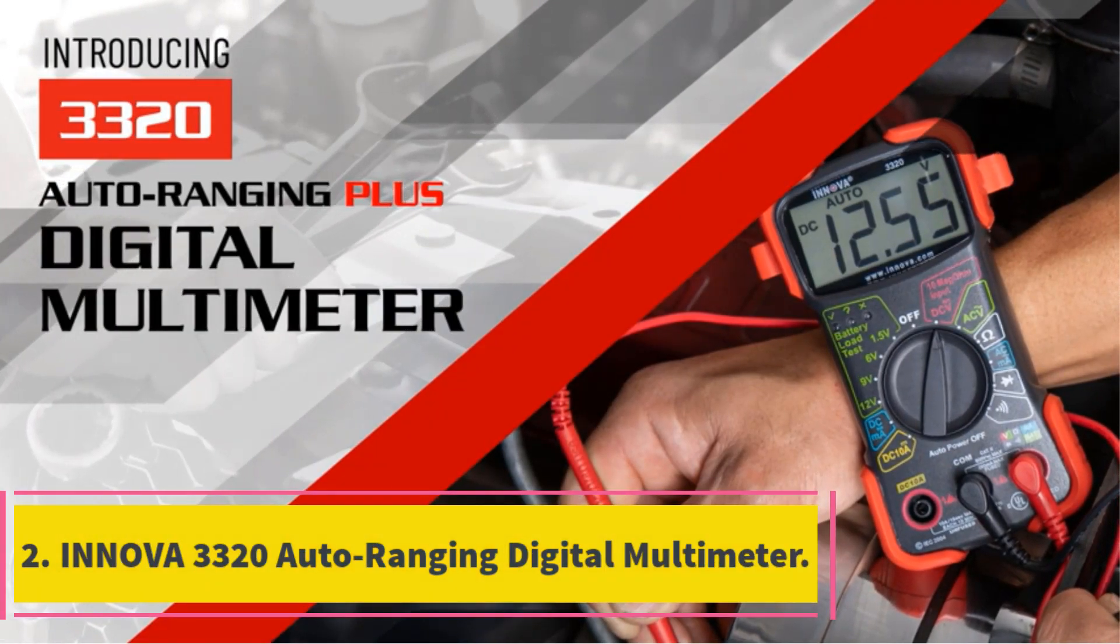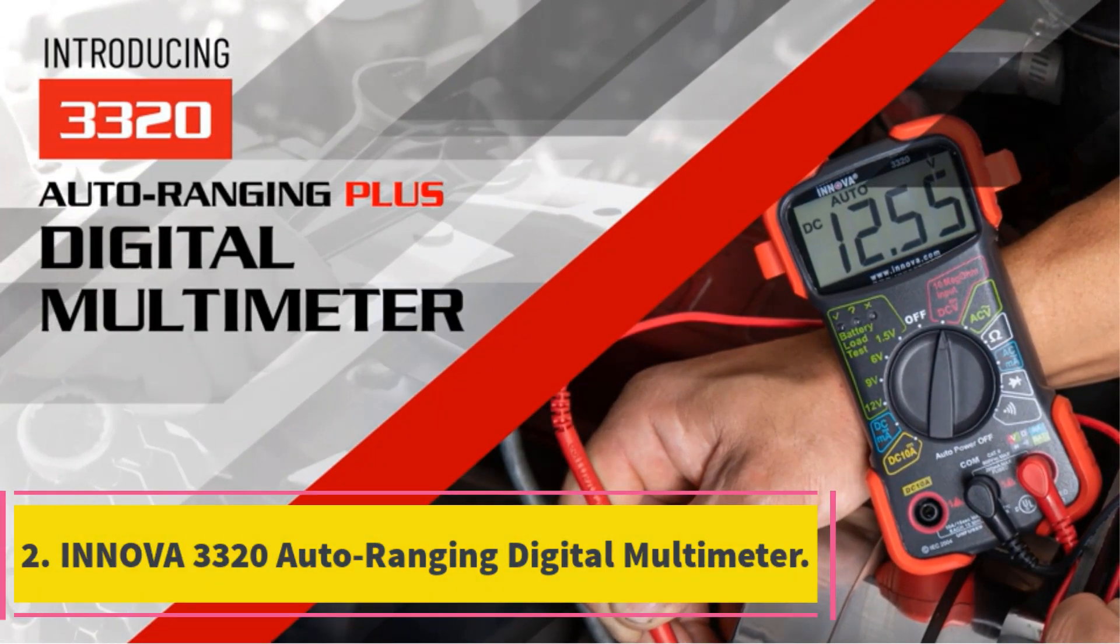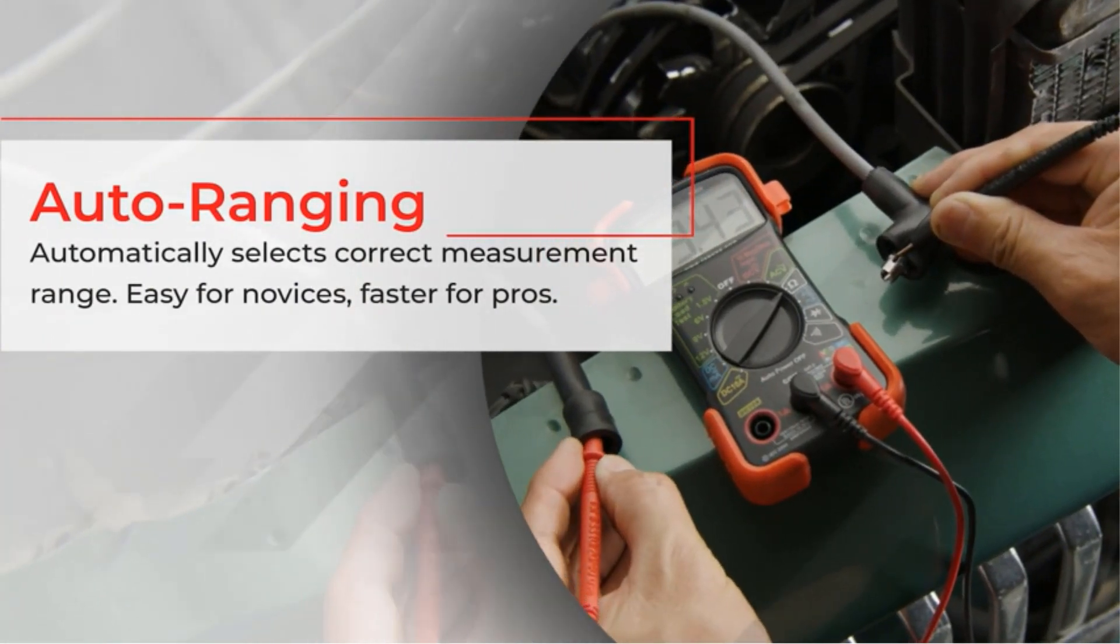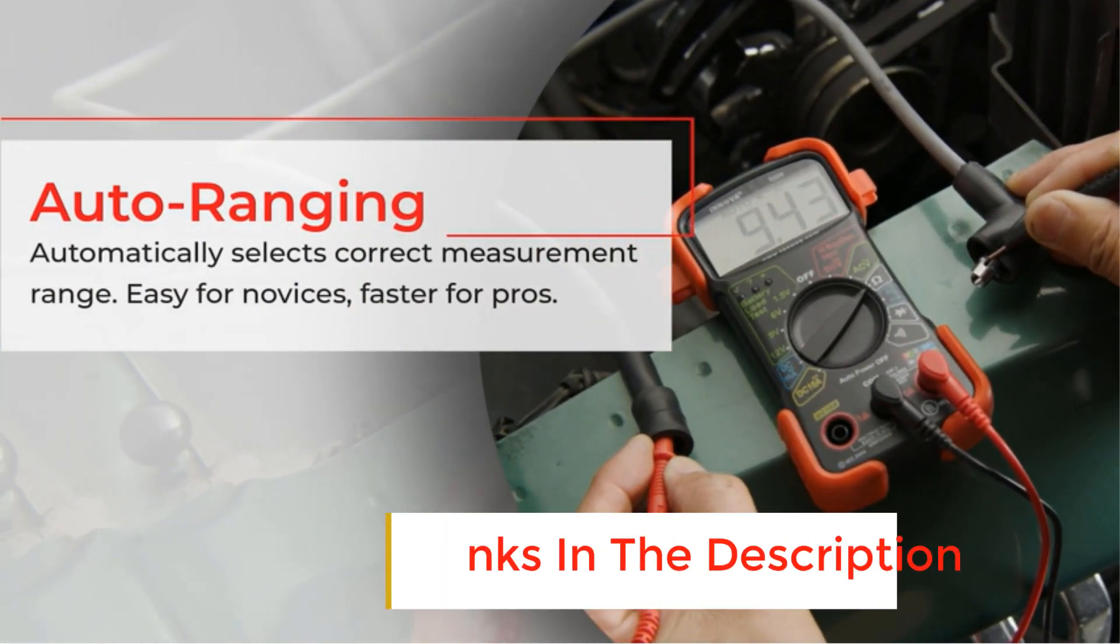Number 2. Iniver 3320 Auto Ranging Digital Multimeter. This one tops our list of best automotive multimeters for the money.